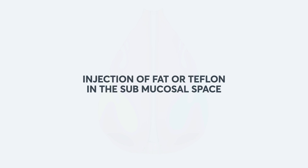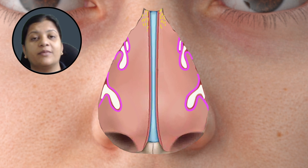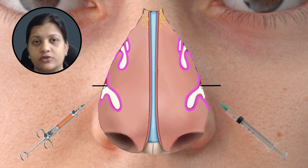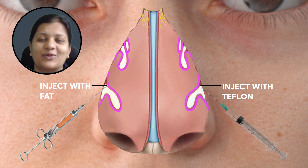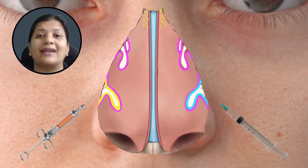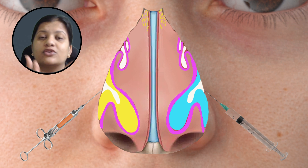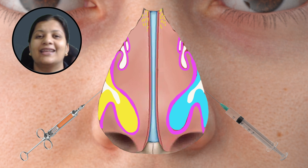A third surgical option is injection of fat or Teflon into the submucosal spaces of the turbinates. Since the bone inside the turbinate and the mucosa are both shrunken, injecting fat or Teflon into the submucosal space acts as a spacer, bulging up the turbinates. The bulged and boggy turbinates then reduce the airway space, serving the same purpose as the other two surgeries.